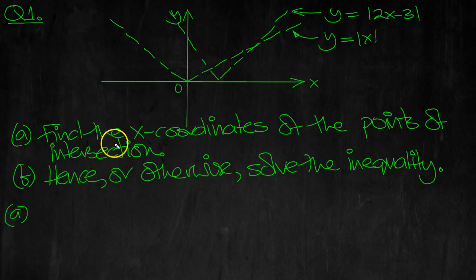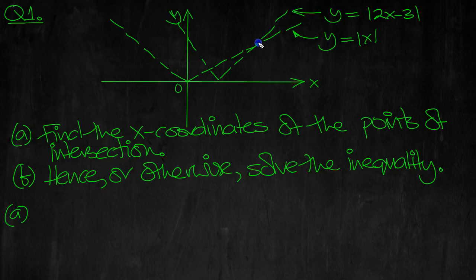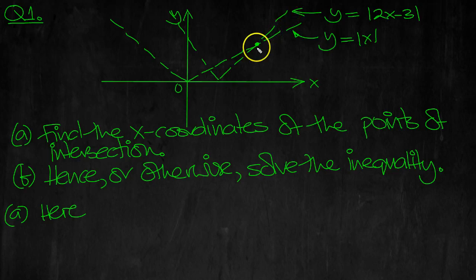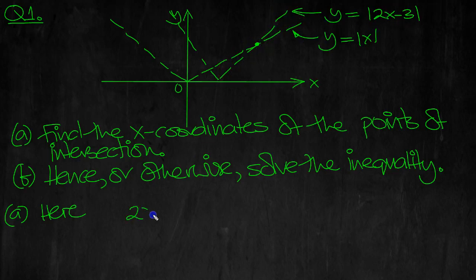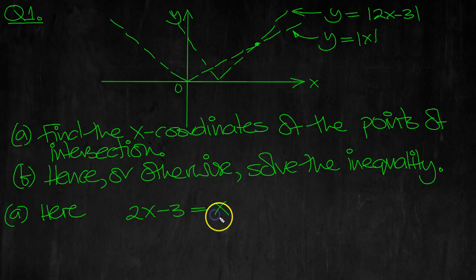Find the x-coordinates of the point of intersection. We've got the sketch here to help us. At this point of intersection, we can see that this part of the line will be the positive part of this modulus, which is x.